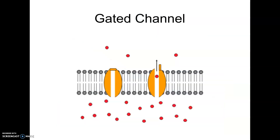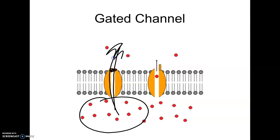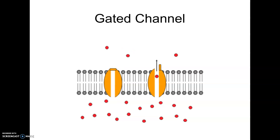This is what's called a gated channel. Gated channels are normally closed. You still have a high concentration, but the gates are closed — sort of like everybody waiting to get into a concert. When those gates open, everything comes pouring through. This is actually a really important part of how your nervous system works: you have gated channels that open when your nerves get stimulated, and they let sodium ions through.